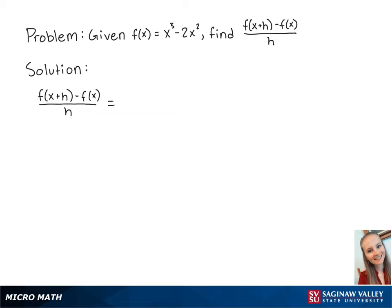For this problem, we have the function f of x equals x cubed minus 2x squared, and we're going to find the difference quotient f of x plus h minus f of x over h.